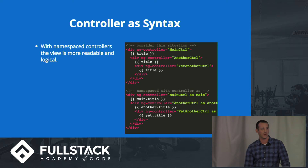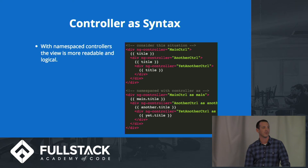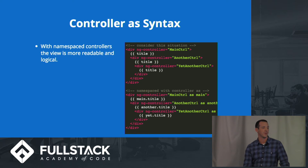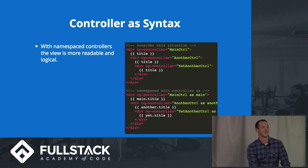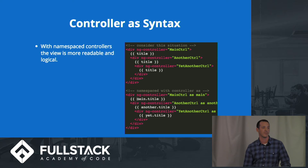Consider the situation where we're not using the controller-as method — it can get a little hairy when you have similar properties or methods on the controllers. You'll see we have three different titles here and it gets confusing to see what's what. As opposed to the bottom situation where we're instantiating the controller and aliasing it as main, as another, and as yet — so you'll see we have a namespaced title, where main.title applies to the title on the main controller, and so on.